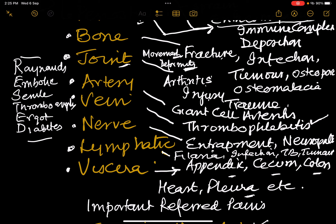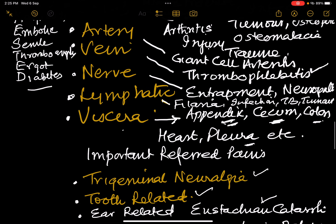Lymphatics can be involved in filaria, infection, TB, or tumor. Viscera such as the appendix can cause pain and tenderness at McBurney's point. The cecum is involved in amoebic typhlitis. The colon in colitis. The pleura is associated with a pleural rub and pain that increases on inspiration and expiration. Similarly, you can have a splenic rub — subacute bacterial endocarditis involving the spleen can cause a splenic rub, splenic infarct, and pain in the splenic region.